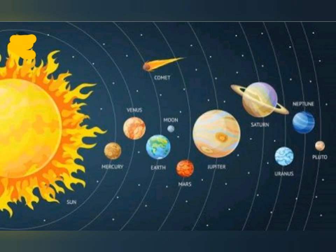There are nine planets in our solar system. The planets near the sun are called inner planets. These are Mercury, Venus, Earth, and Mars.